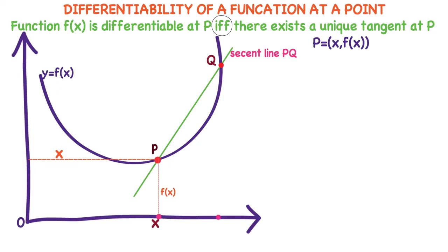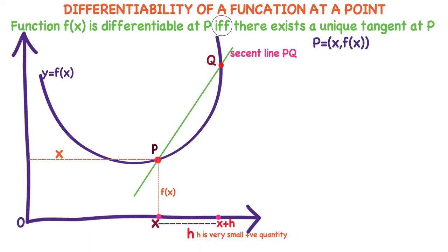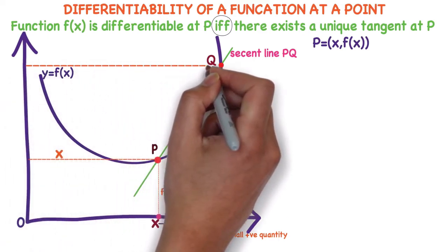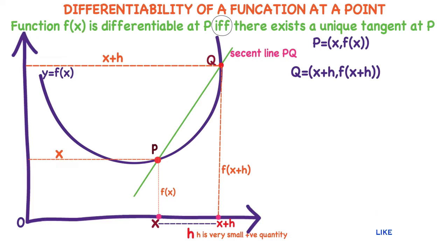Where is the point q? Move towards right from point p, which is at a distance of h units, where h is a very small positive quantity. So q is a point which is at a distance of x+h units from the y-axis. This length is x+h, and the height of the curve at q is f(x+h). Therefore, q is (x+h, f(x+h)).